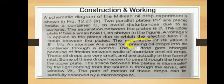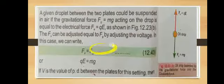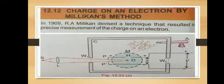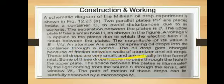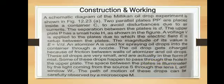Atomizer A is used for spraying oil drops through a nozzle. The oil drops get charged because of friction between the walls of the atomizer and the oil drops. They can also be charged with the help of X-rays. These oil drops are very small and are actually in the form of mist. The space between the plates is illuminated by light coming from source S, through lens L and window W1.